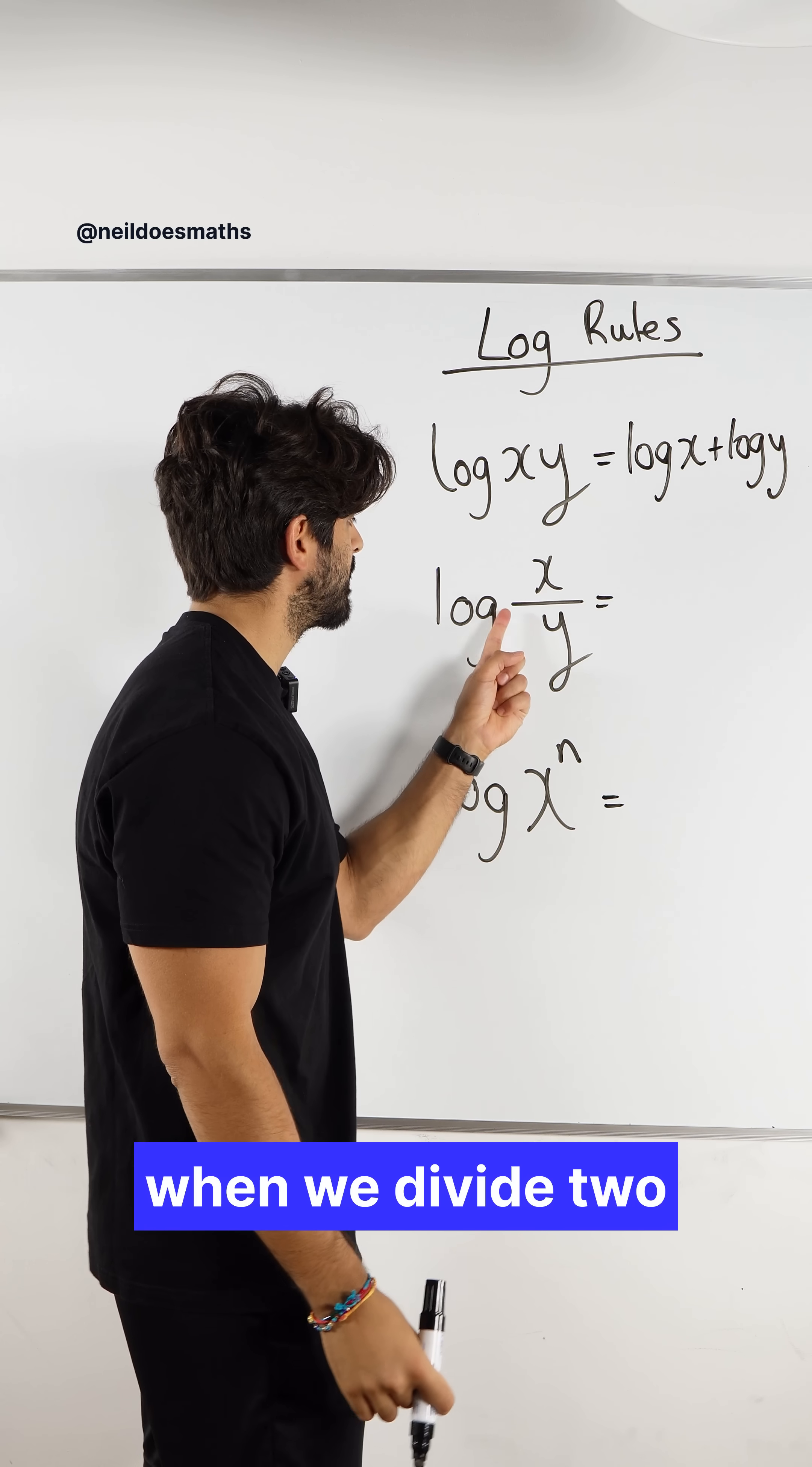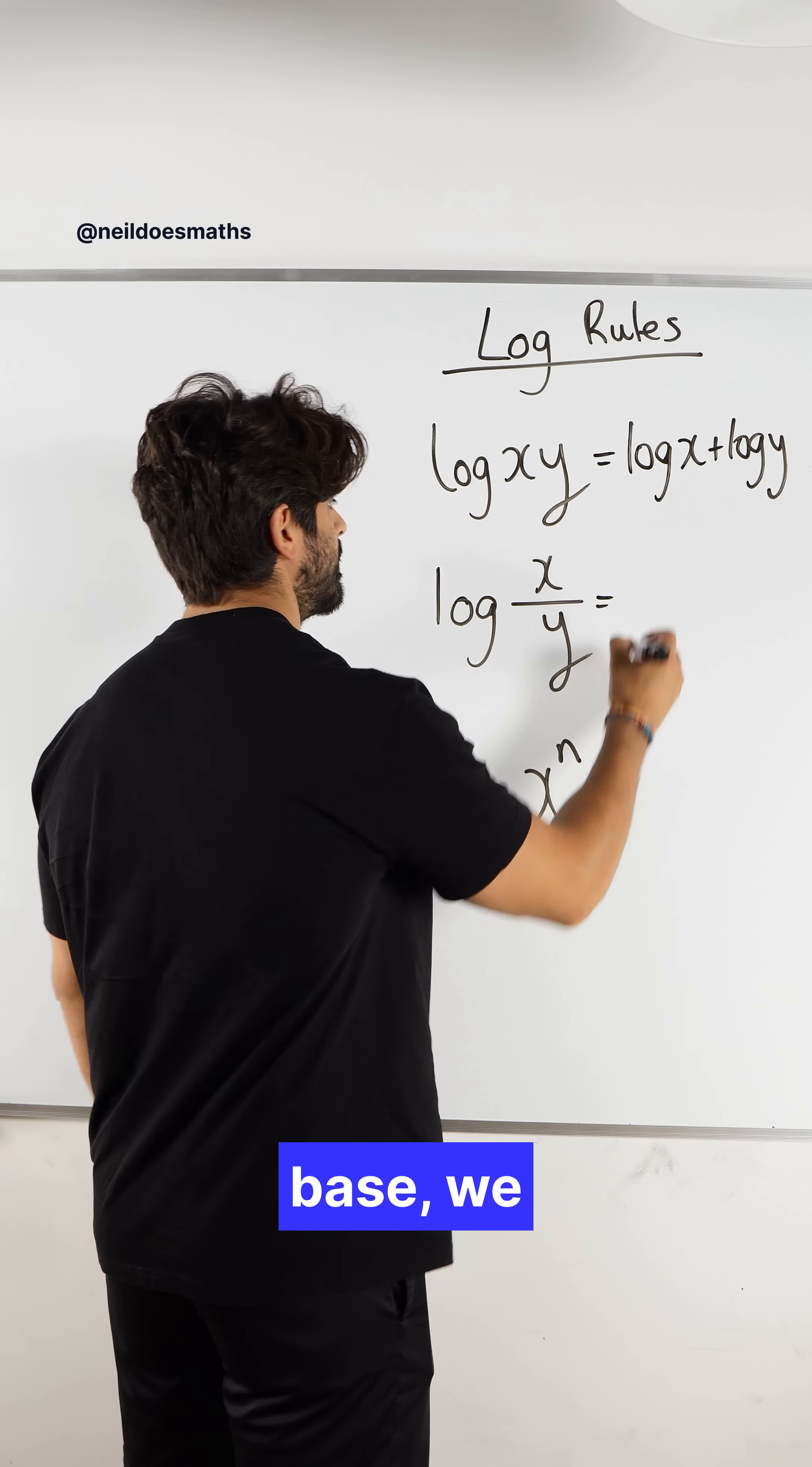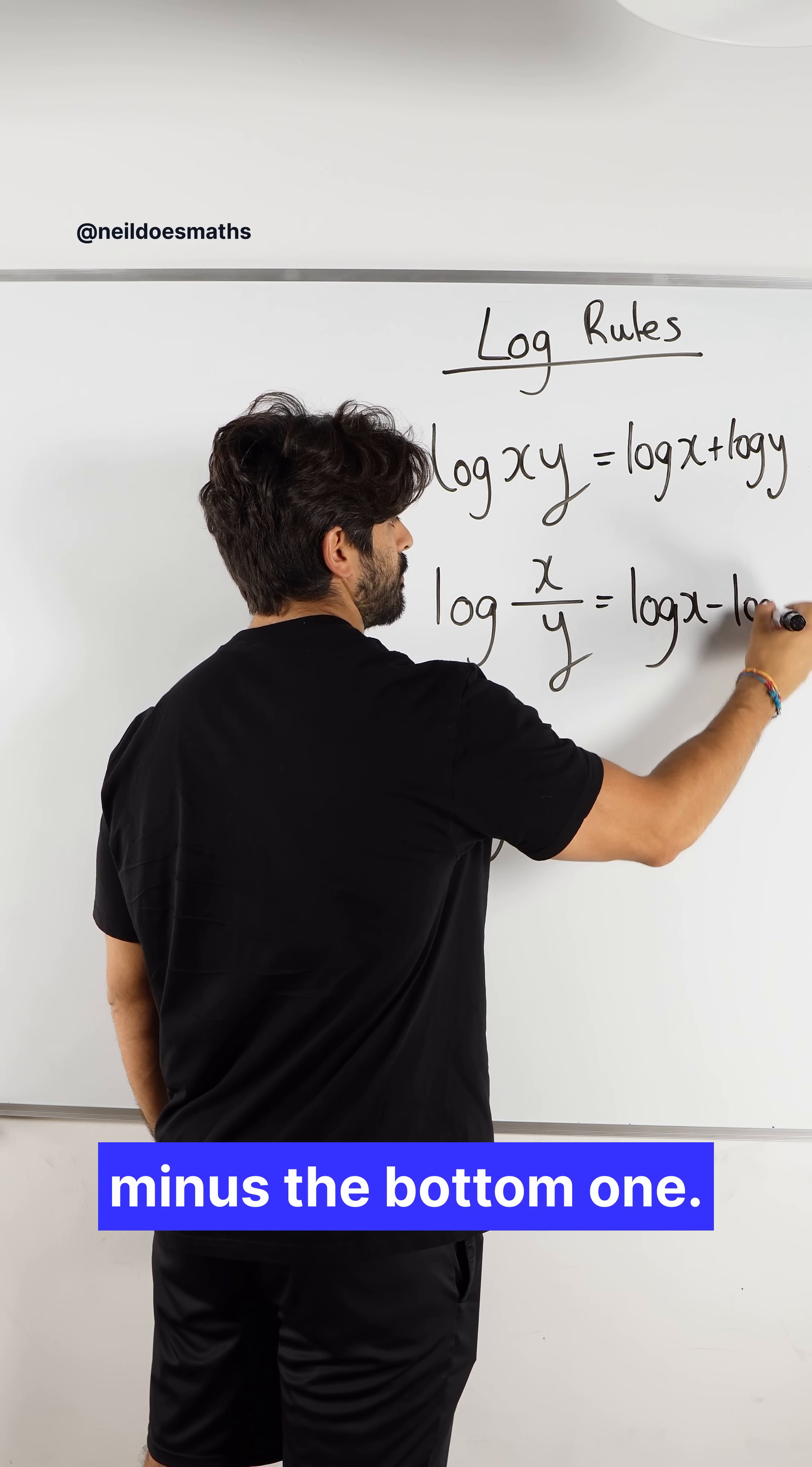What do we know when we divide two numbers with the same base? We subtract the powers. You have to make sure we do the top one minus the bottom one.